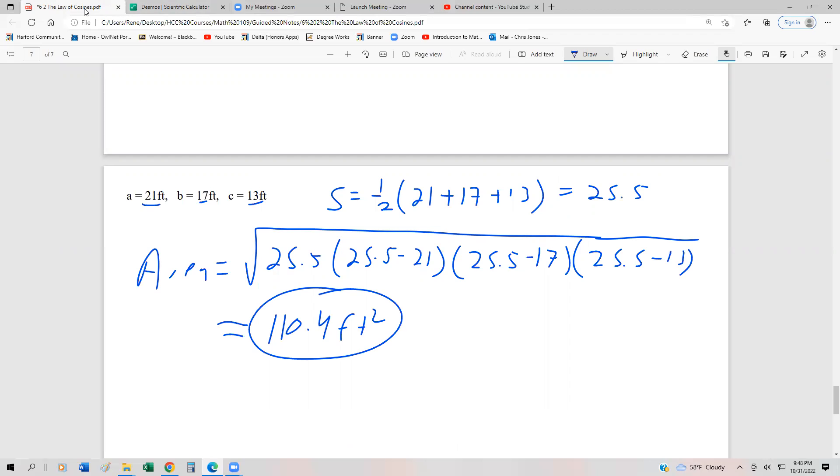So Heron's formula, really easy for us to use, strictly a computational problem. And again, it's a derivation from one of our law of cosines. So that's everything with the law of cosines.